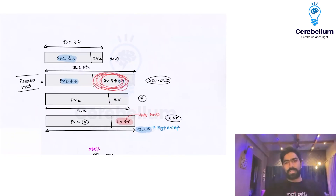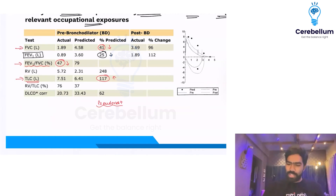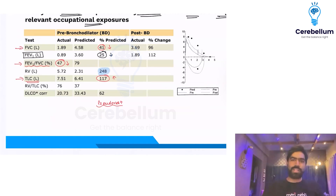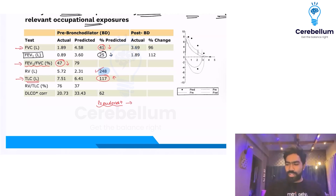Pseudo-restriction is caused by severe air trapping — that is, a severe increase in residual volume. The residual volume here is 248%, which is extremely elevated. This confirms that this patient is having severe obstruction causing pseudo-restriction due to extremely severe air trapping, and that is why FVC is declining.